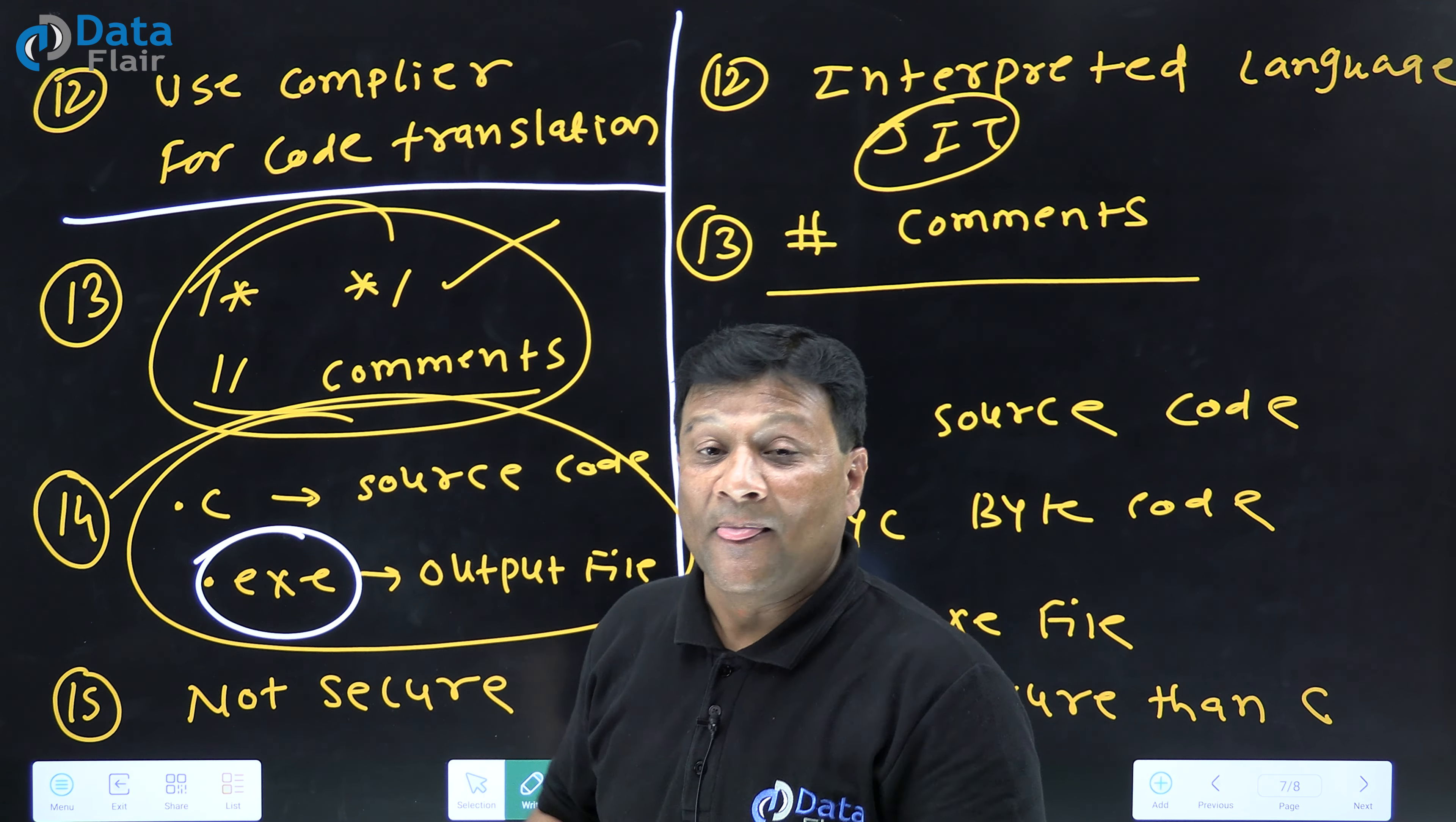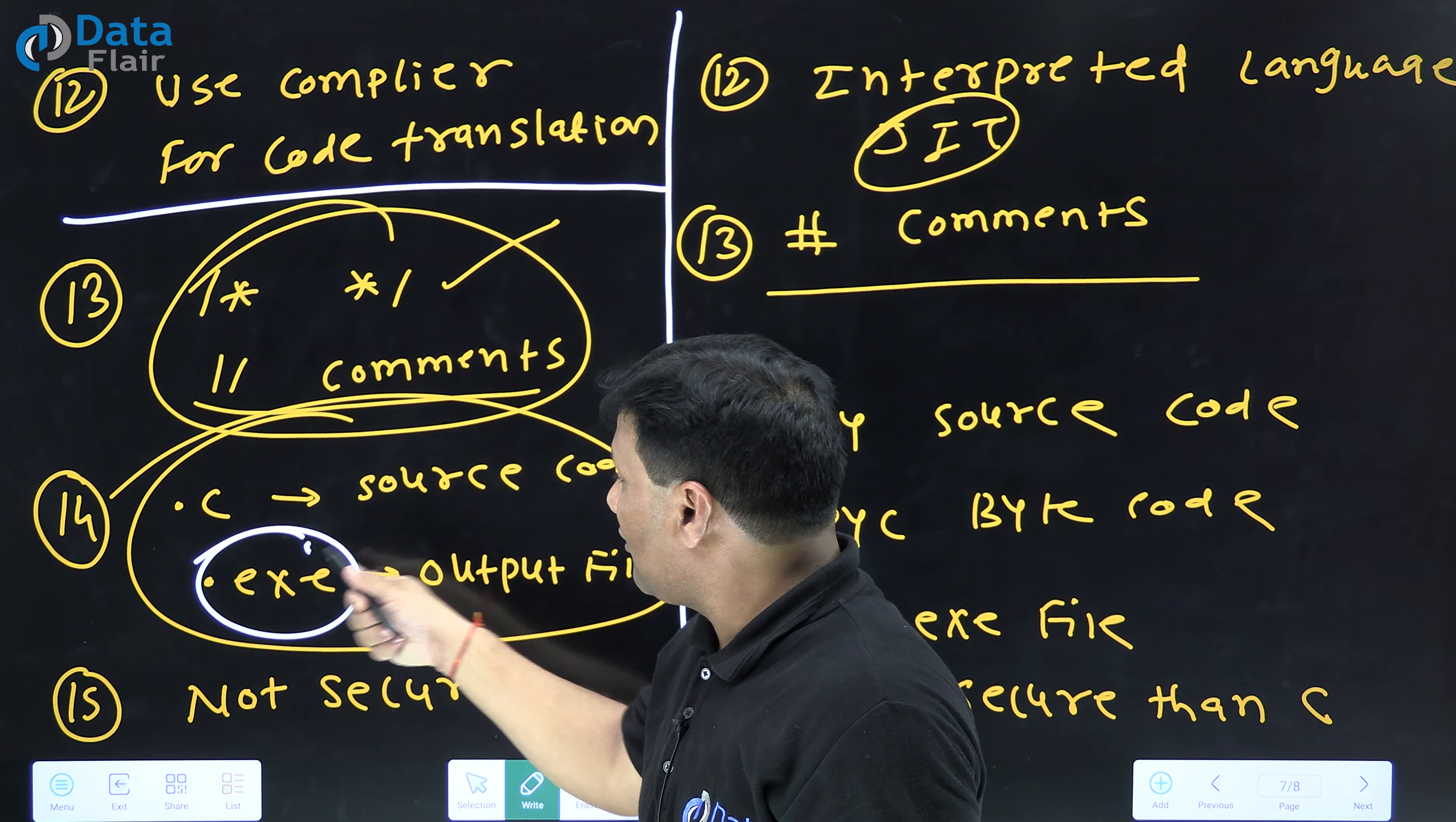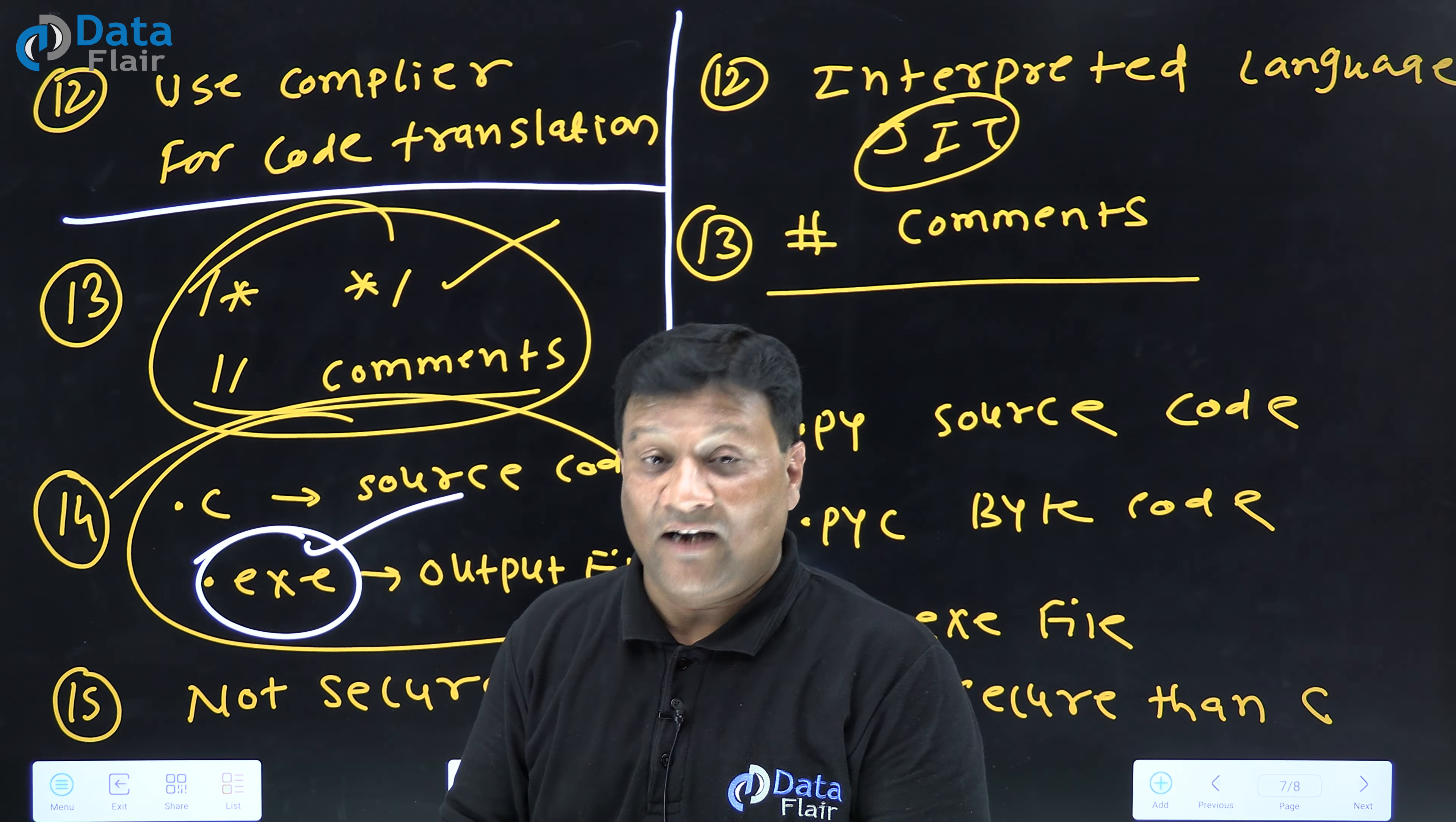C creates .exe file to store the output of the code. C ka program, when it creates its output file after code translation, that output file is a .exe file.